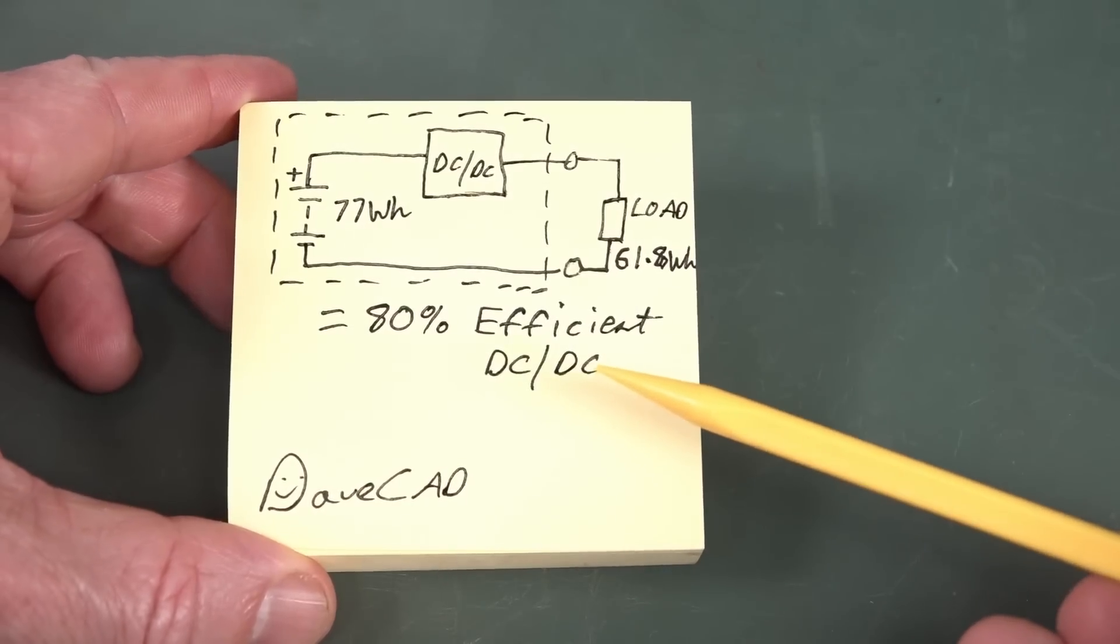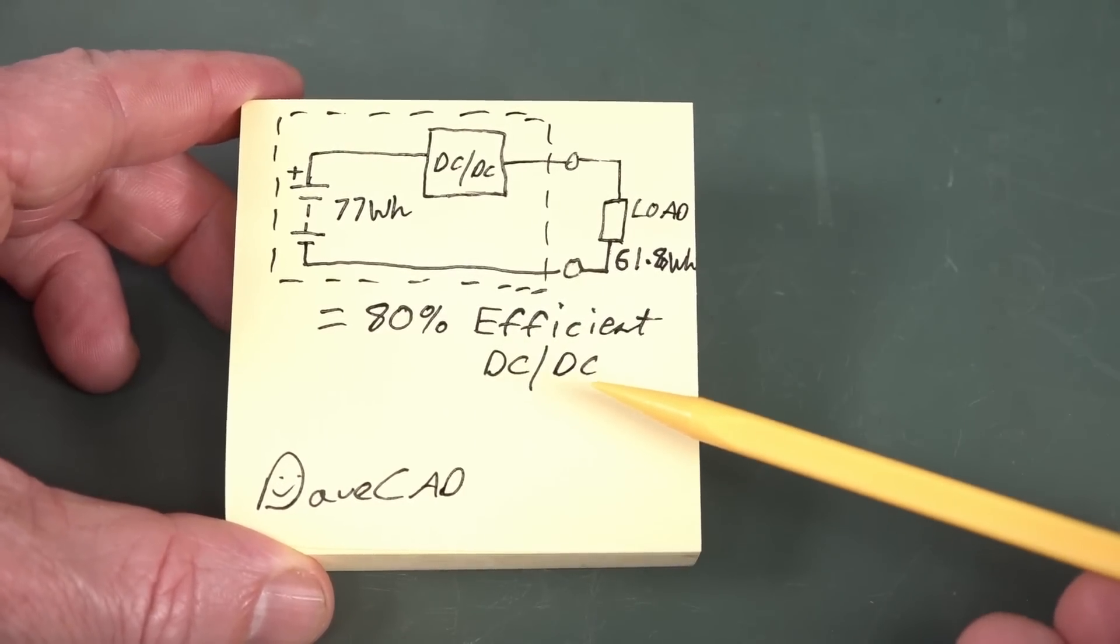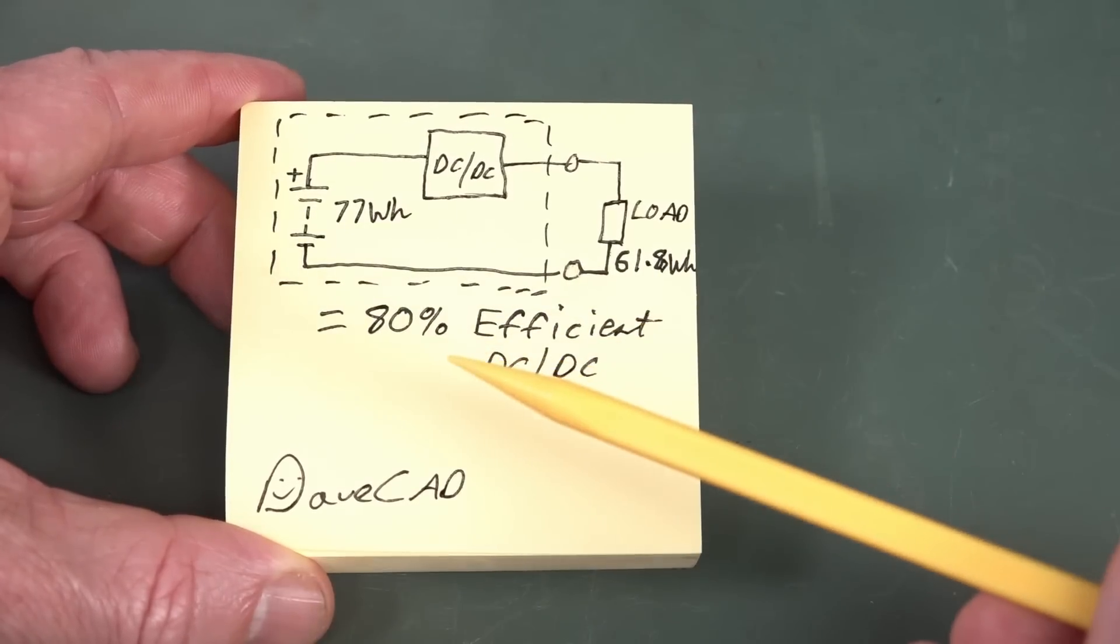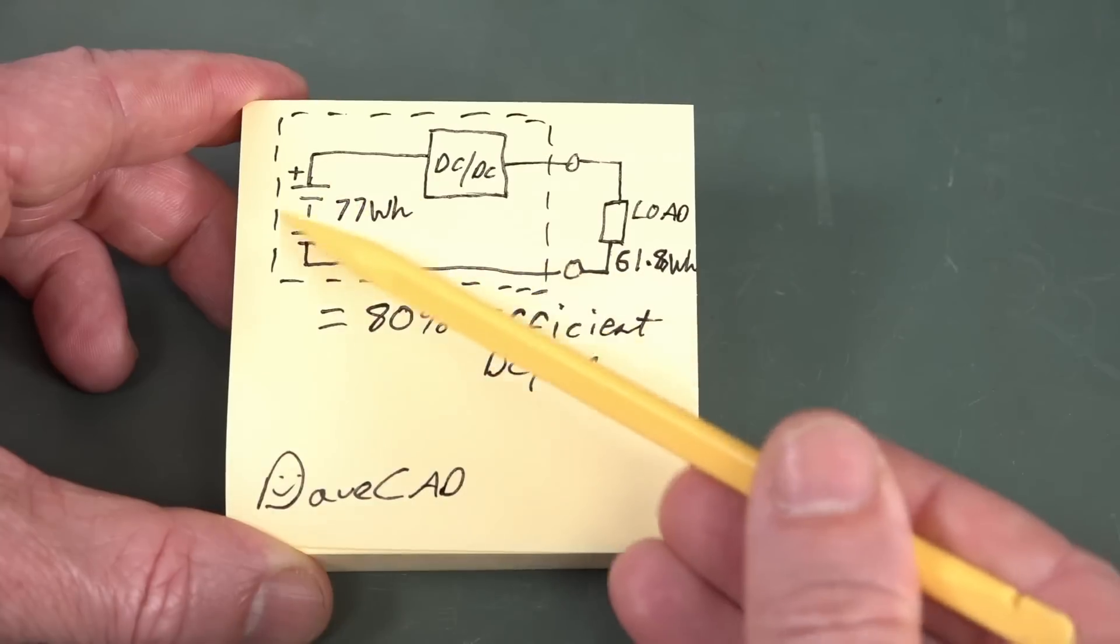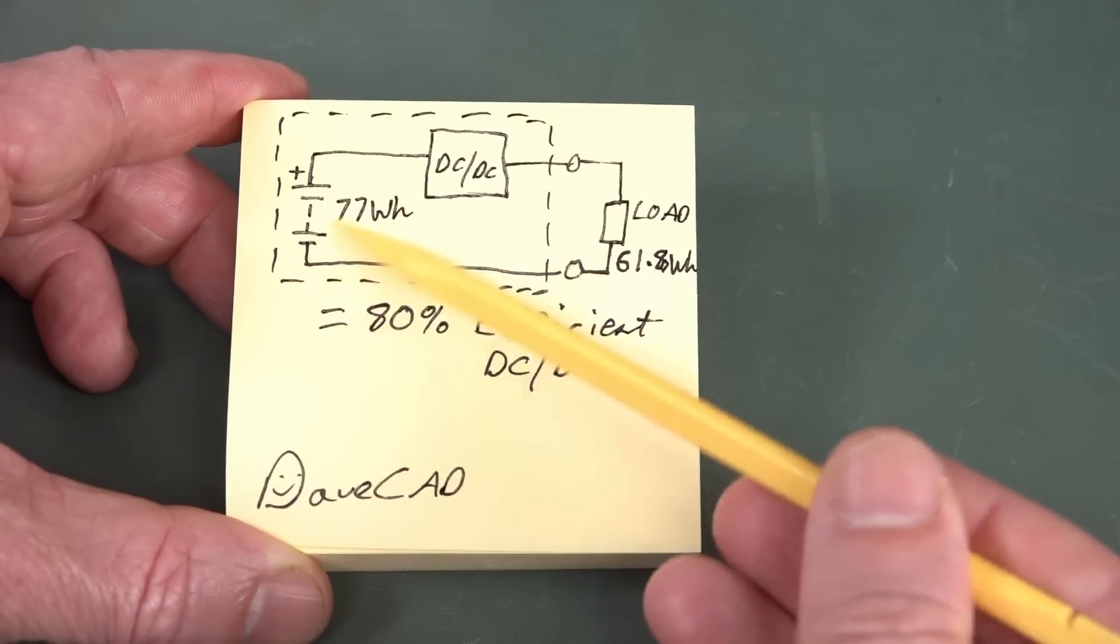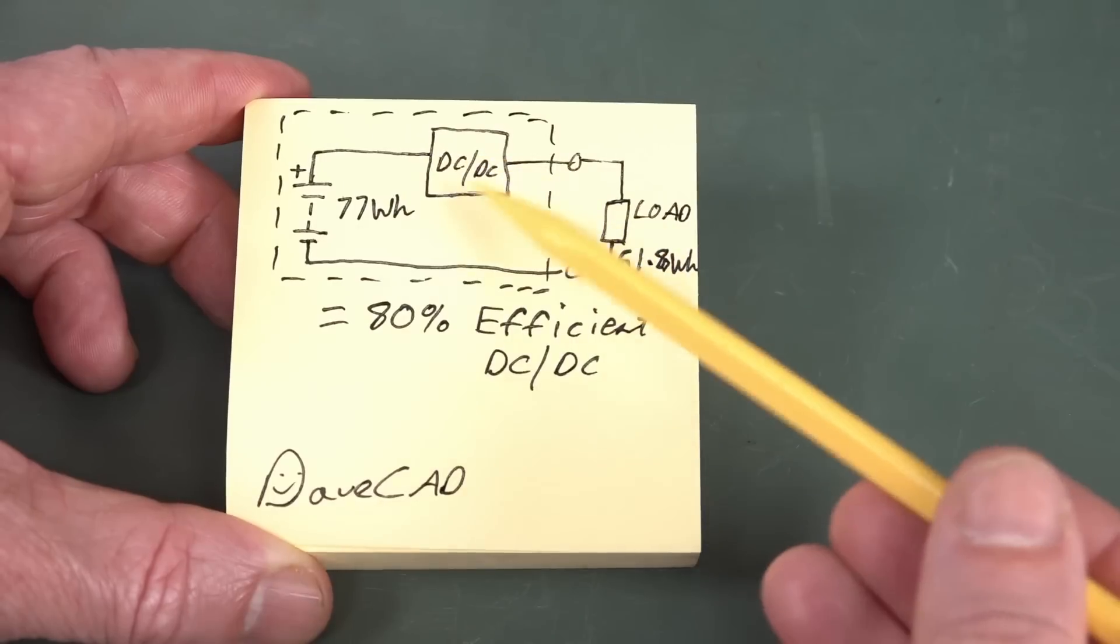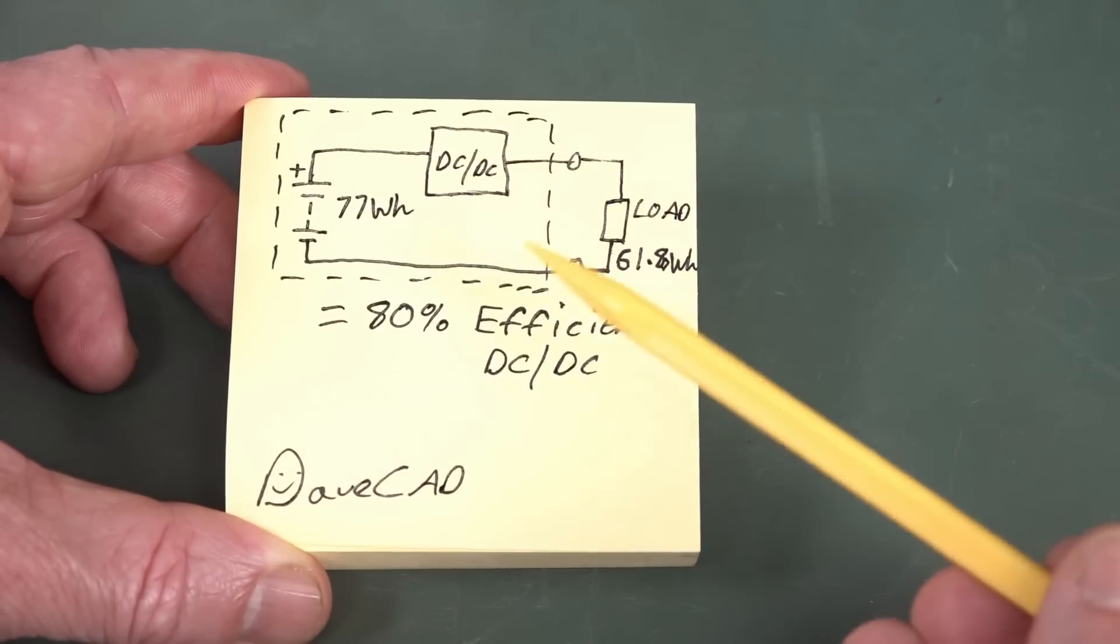Well, the problem here is the marketing department, that 20,000 milliamp-hour capacity is what's called input-referred. And what that means is that here is the battery bank here, it has the battery, the actual battery inside here, and then a DC-to-DC converter to drive the output here.